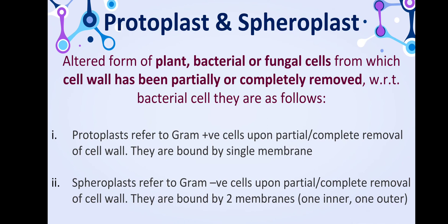Protoplasts and spheroplasts are altered forms of plant, bacterial, or fungal cells from which the cell wall has been partially or completely removed. In bacterial cells specifically, protoplasts come from gram-positive bacterial cells with complete or partial removal of the cell wall and are bounded by only a single membrane. Spheroplasts come from gram-negative bacterial cells whose cell wall has been partially or completely removed, and they are bounded by two membranes — one inner and one outer membrane.